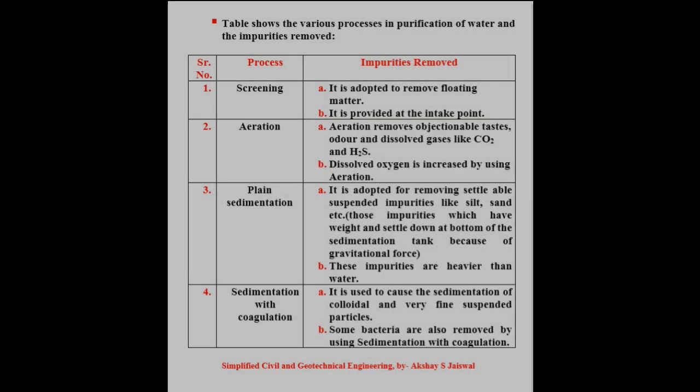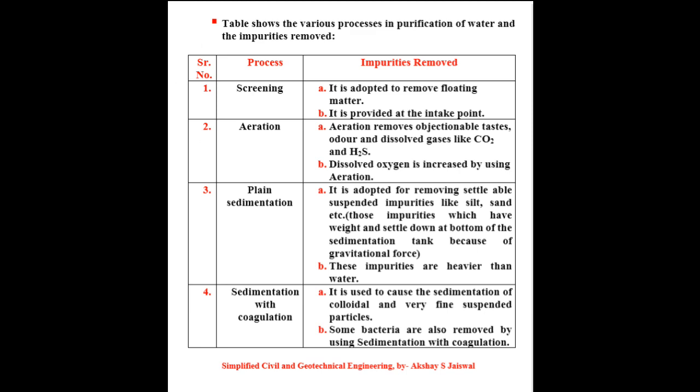This table shows the various processes in purification of water and the impurities removed. The first process is screening — it is adopted to remove floating matter and is provided at the intake point. The next process is aeration — aeration removes objectionable tastes, odours, and dissolved gases like CO2 and H2S; dissolved oxygen is also increased by using the aeration process.